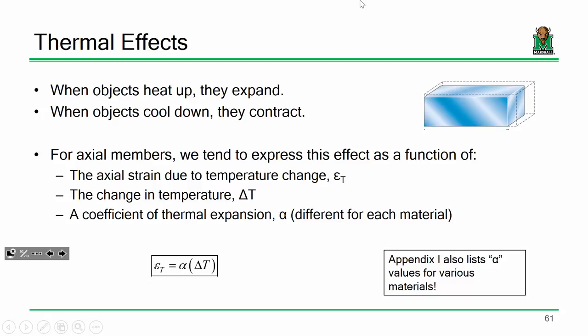For torsionally loaded members — things that are twisted — we'll deal with power-torque relationships. Temperature variations can cause deformation, just like taking an inflated balloon and heating or cooling it changes its volume. With a solid, when an object undergoes a temperature variation — a change in temperature — it produces a strain, an axial strain. For our purposes, we're really only considering elongation and contraction.